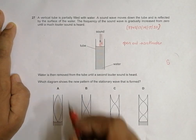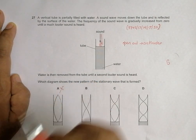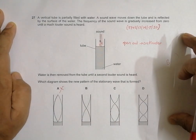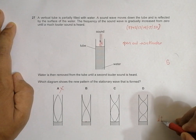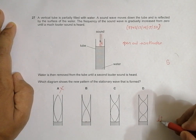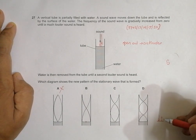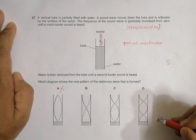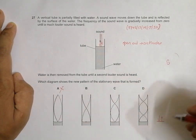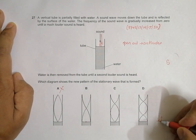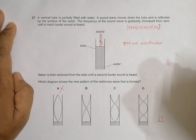At the water surface, when air molecules strike it, they immediately reflect back. The displacement of the particles at that boundary should be zero, because the vibration of air molecules is killed by the water molecules — they are very dense and heavy — so the amplitude of vibration at the closed end or water surface should be zero, meaning there should be a node there.